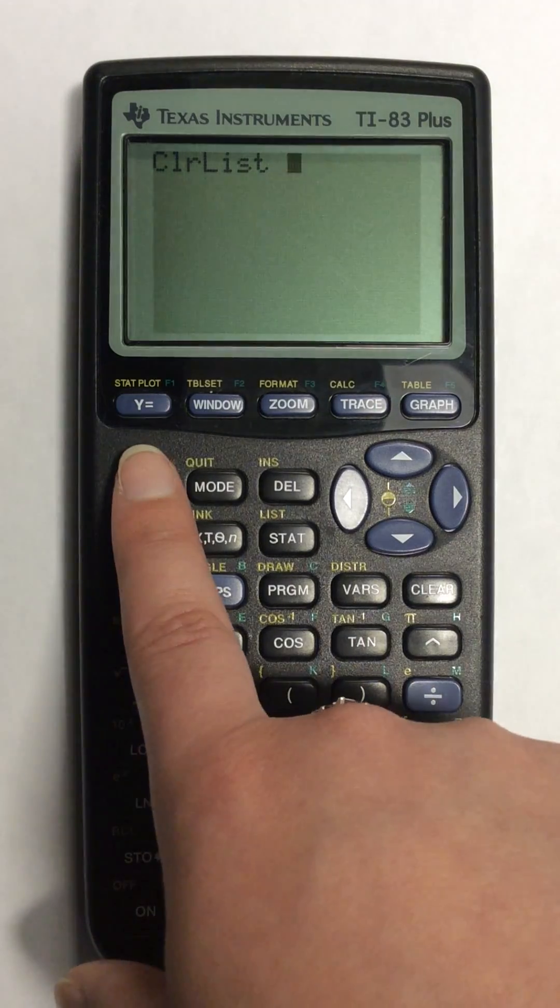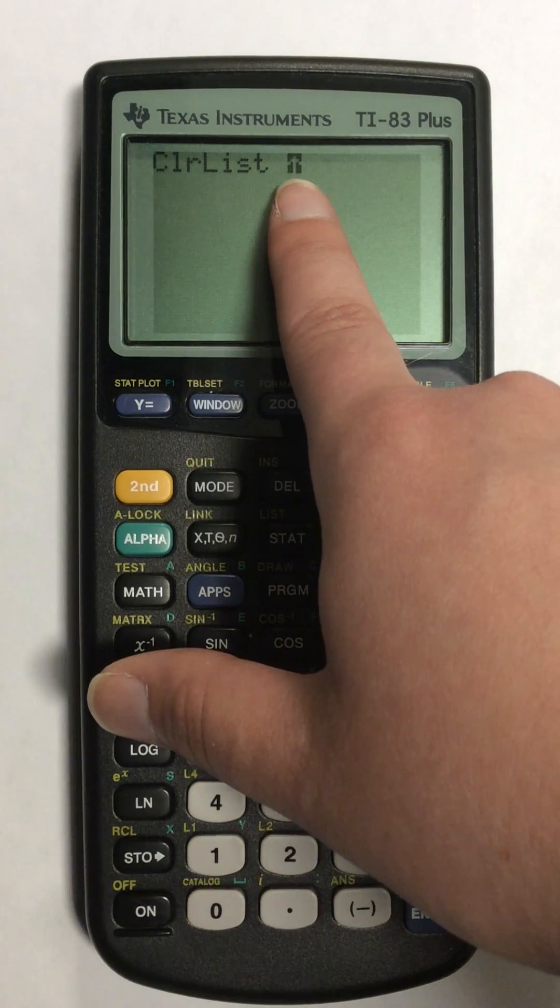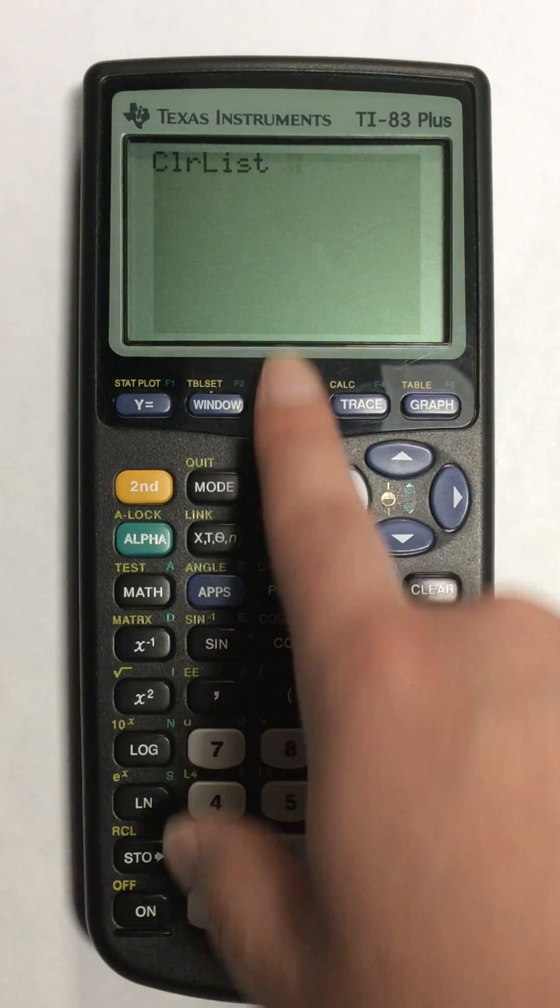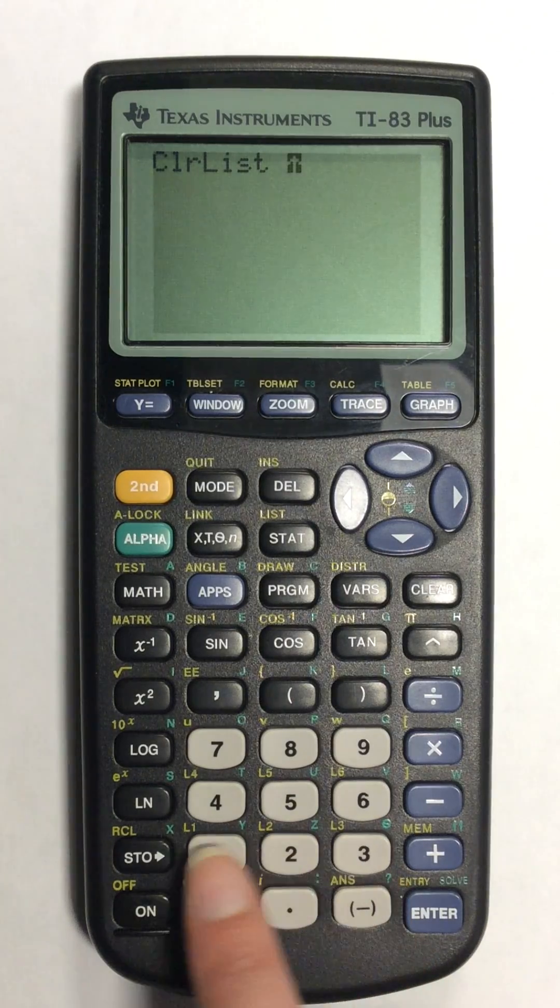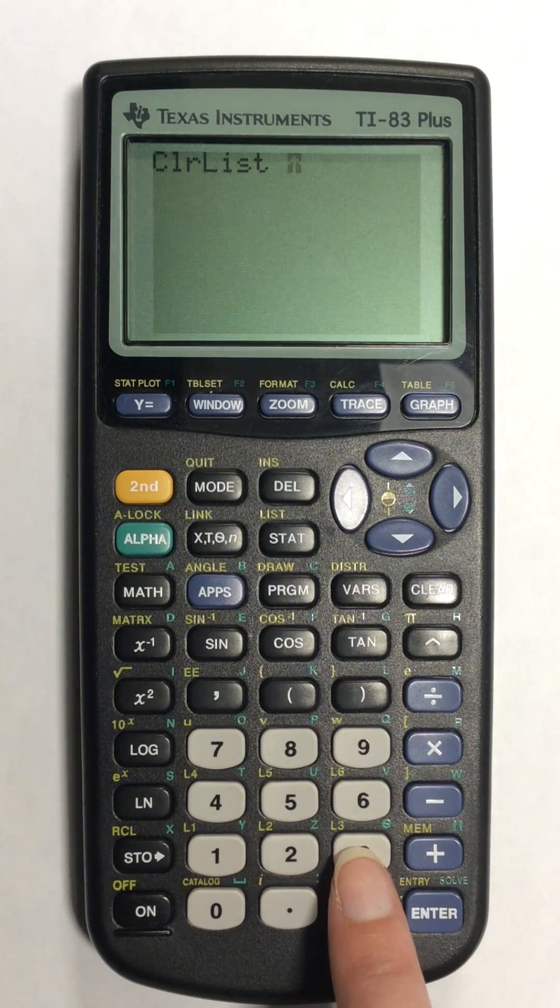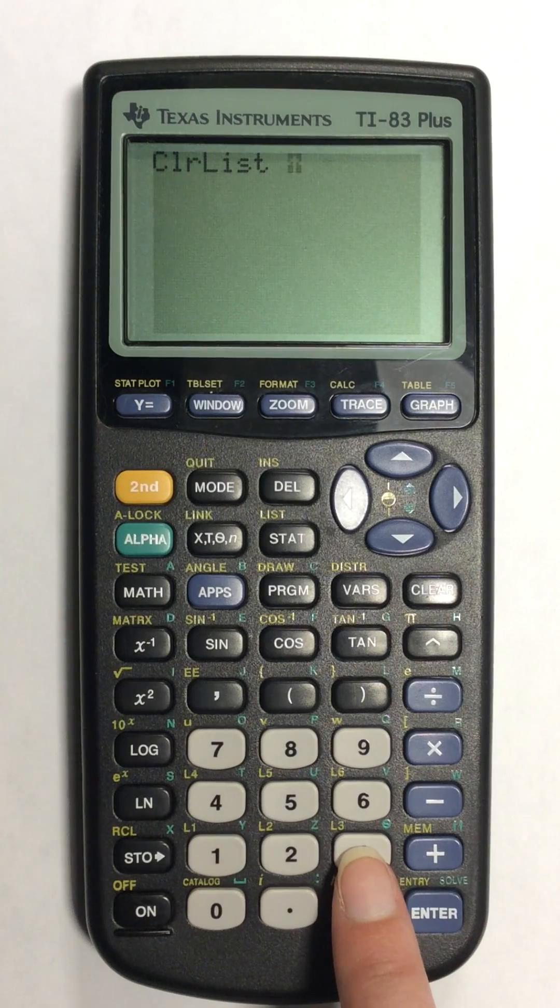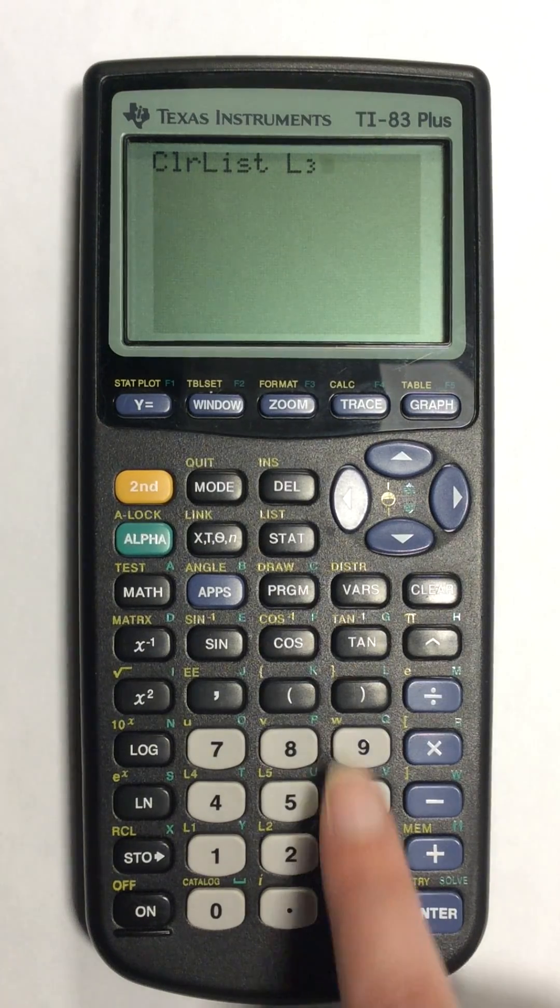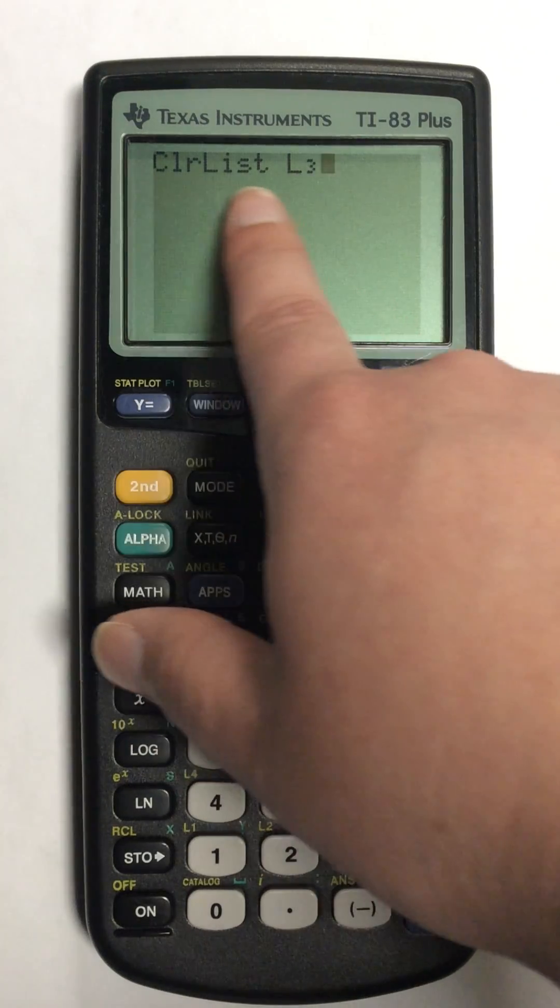So if I hit second, you'll see the up arrow shows instead of just the blinker. And now I can come down here to my keypad and hit the number of what list I want to clear. I want to clear list 3, so I'm going to hit number 3. And L3 shows up right after my clear list.